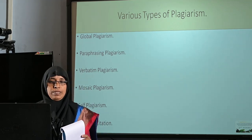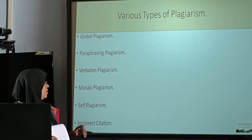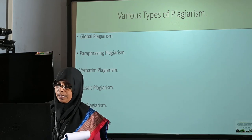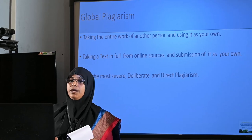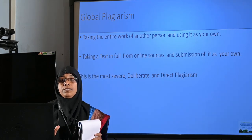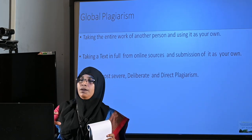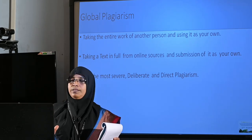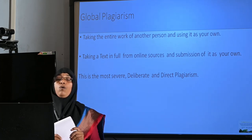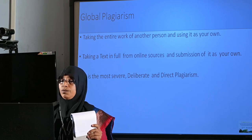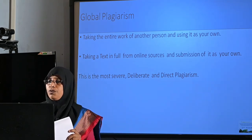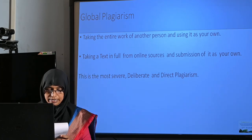The six types are: global plagiarism, paraphrasing plagiarism, verbatim plagiarism, mosaic plagiarism, and self-plagiarism. Global plagiarism means taking the entire work of another person and using it as your own — this is the most severe kind, where one person uses another's complete work without any credit, citation, or acknowledgement. For example, cutting and pasting a full paper, thesis, or article from an online source and submitting it as your own is the most deliberate and direct form of plagiarism.